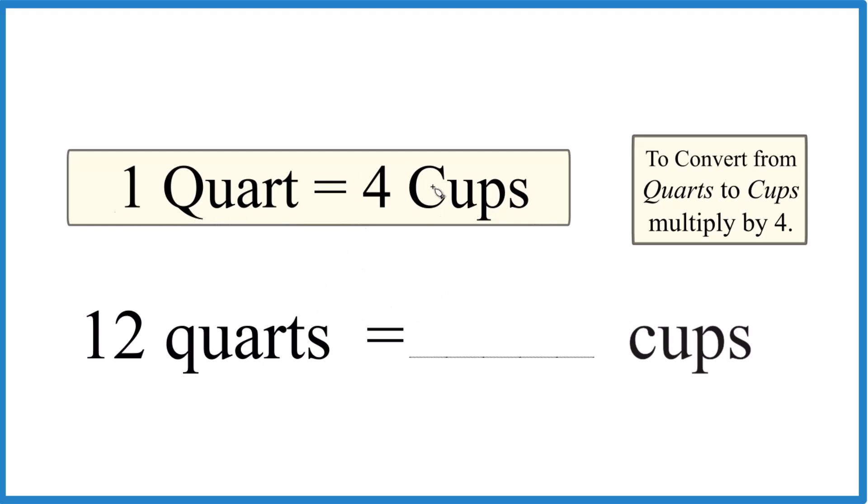So if one quart equals four cups, 12 quarts equals 12 times four, that's 48. So 12 quarts equals 48 cups. That's one way to figure it out.